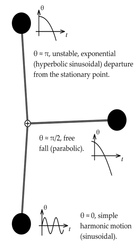Nonlinear dynamical systems, describing changes in variables over time, may appear chaotic, unpredictable, or counterintuitive, contrasting with much simpler linear systems.